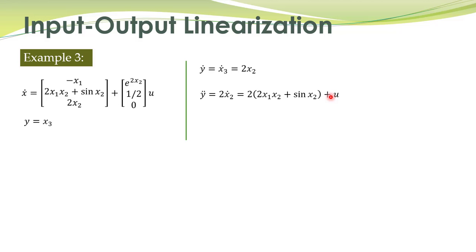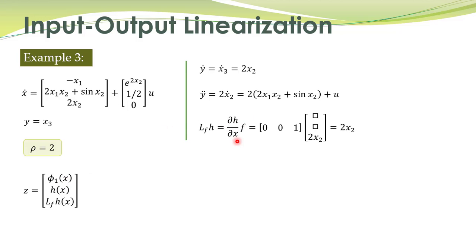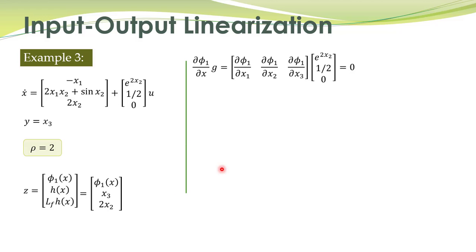Once we know the relative degree, the transformation is given by this expression. h of x is already known; Lf h of x can be easily found. Lf h of x equals partial h over partial x times f of x, which comes out to be 2x2. Therefore the transformation has h of x equal to x3 and the second component equal to 2x2.